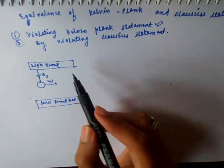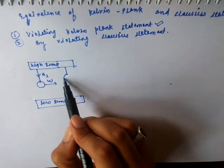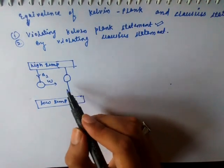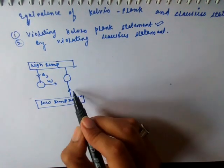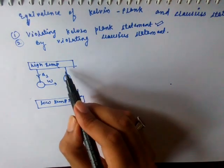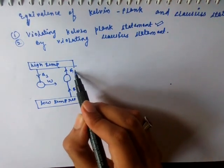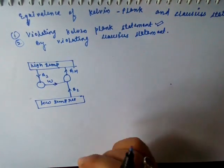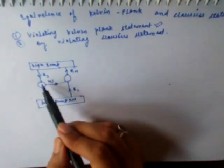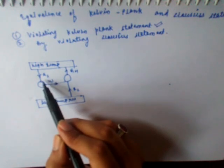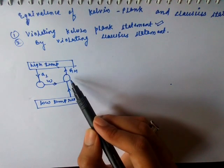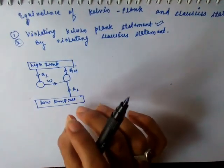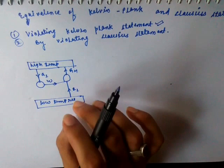To prove this, let us assume there is another device that transfers heat from the low temperature reservoir to the high temperature reservoir by using this work W. So in this case the Kelvin-Planck statement gets violated, while the Clausius statement remains valid here.